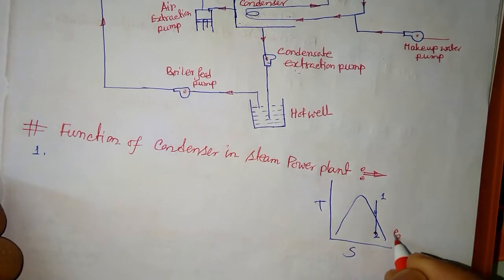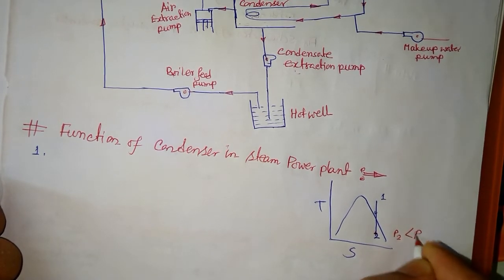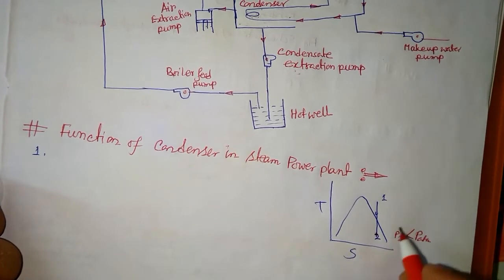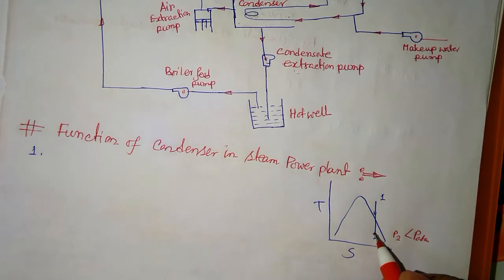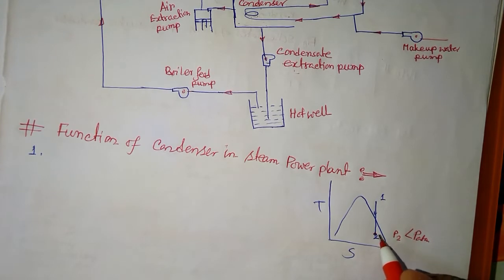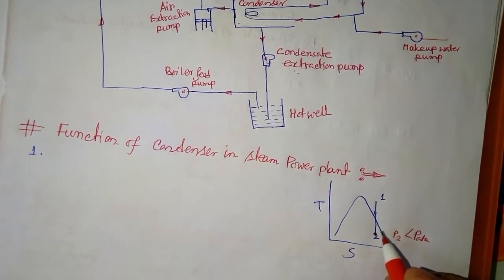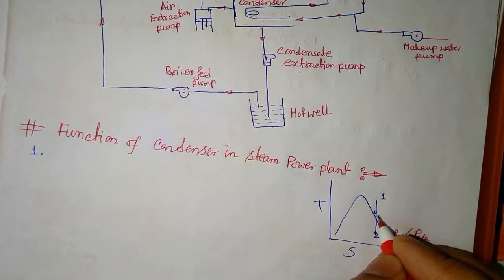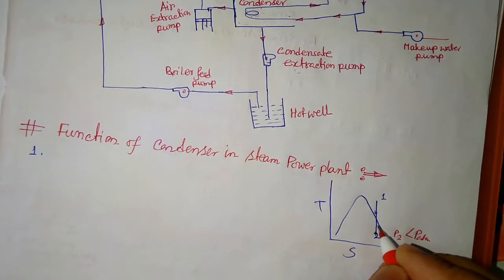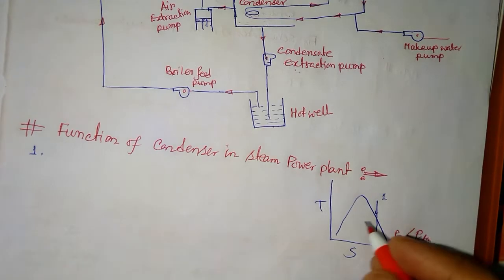So due to the condenser, expansion in the turbine is greater. The condenser reduces the turbine exhaust pressure, and as a result, the specific work output of the turbine increases.